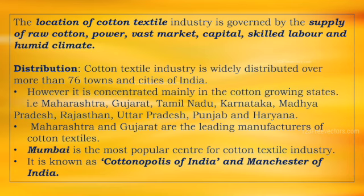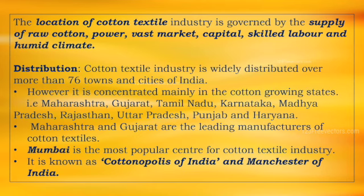Students please make a note. This can also be a very important public examination question: What are the factors required for the location of cotton textile industry? The location of cotton textile industry is influenced or governed by supply of raw cotton, supply of power, availability of vast market, availability of capital, skilled labor, and humid climate. These are the factors which influence the location of cotton textile industry in India.